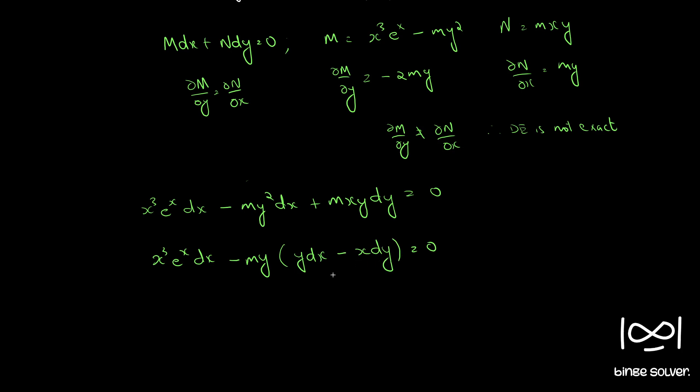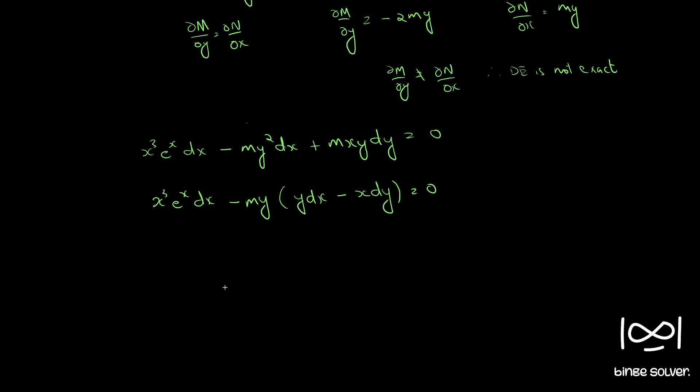If you divide throughout by x cube, we have e raised to x dx minus m into y by x into y dx minus x dy by x square.